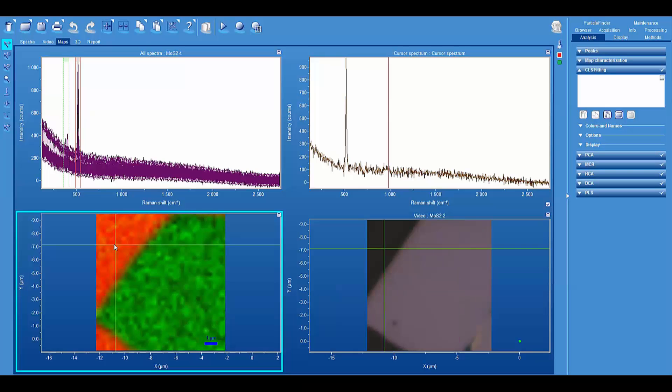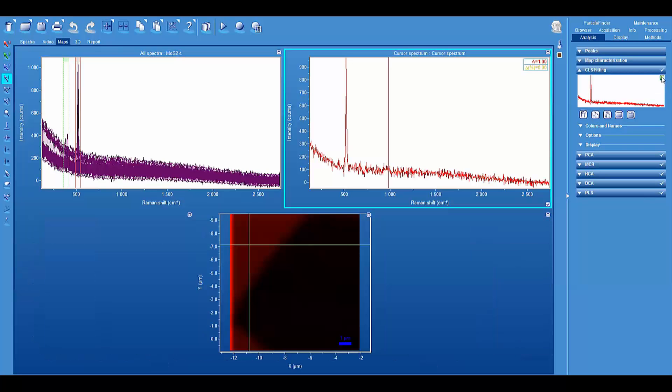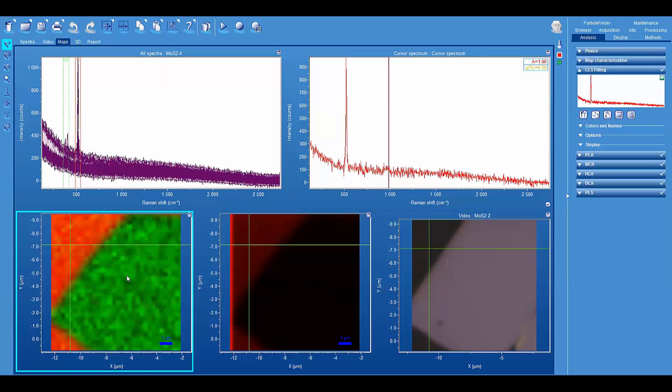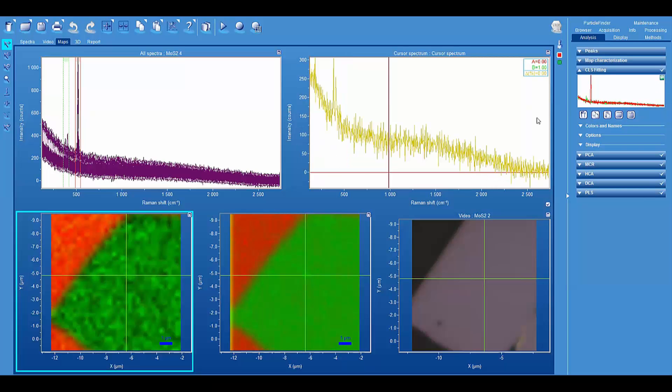Nevertheless, as we see that the signal to noise has been dropping, of course, with the decreased integration time, we can still, based upon the entire spectrum and using classical least squares, we can generate our images based on the spectral contributions. And now we click on the molybdenum disulfide component. And so here then is our classical least squares image in the middle for a 10 millisecond per point integration time.